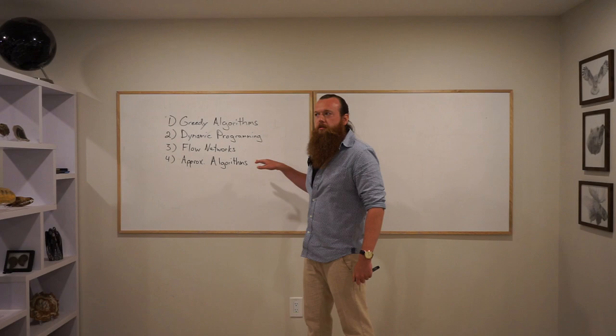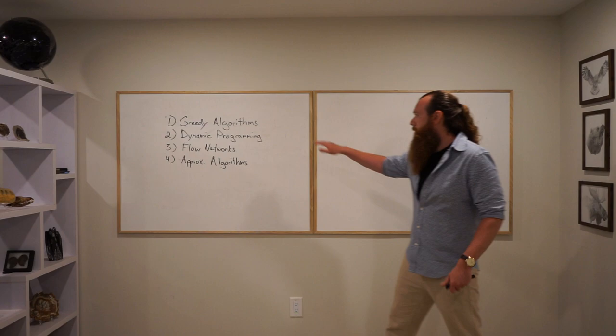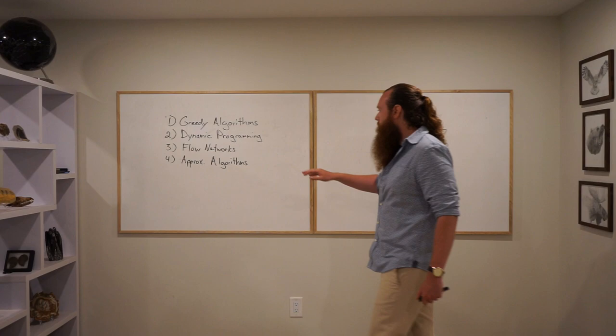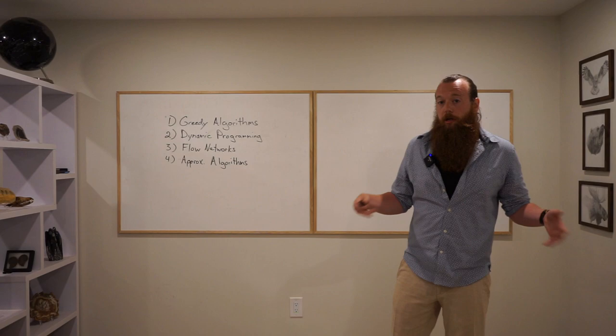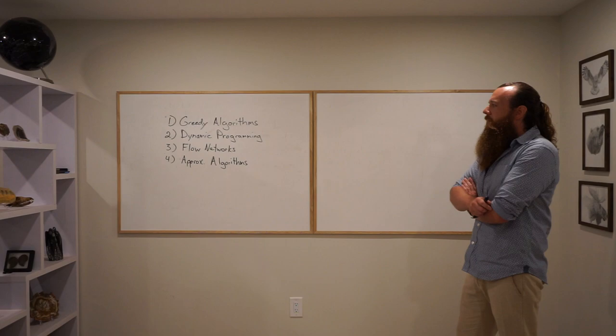And similar to greedy algorithms, we're not going to focus so much on coming up with the algorithm itself as we are proving things about the algorithm. So with the greedy stuff, we're proving an algorithm correct or incorrect. With approximation algorithms, we're going to prove bounds. We'll say, we're not guaranteed to maximize this value, but we're always going to get within, you know, 50% of it, let's say, and we want to prove bounds like that.